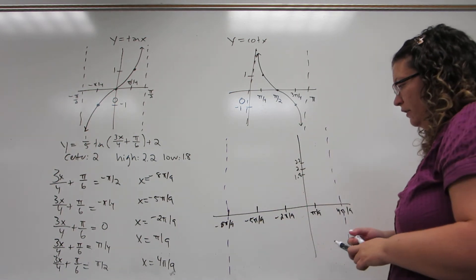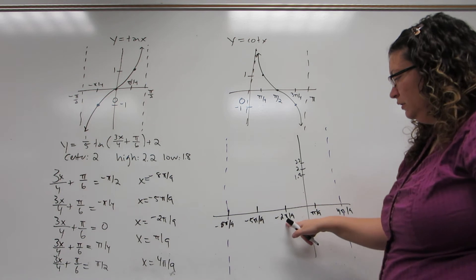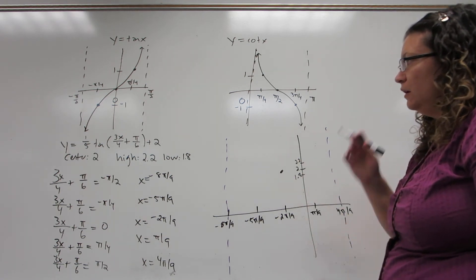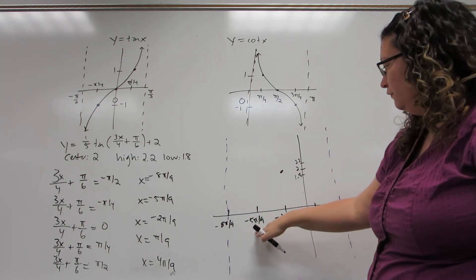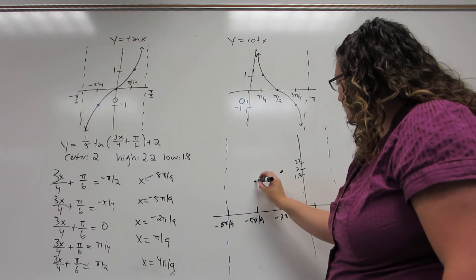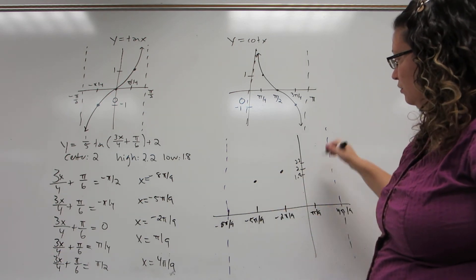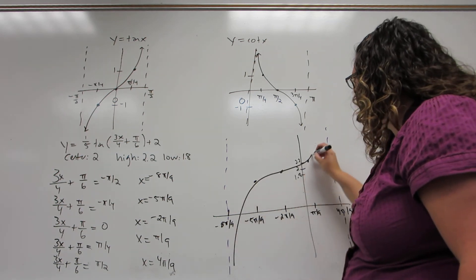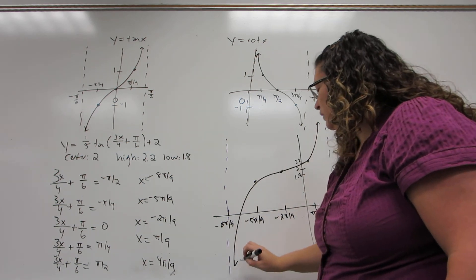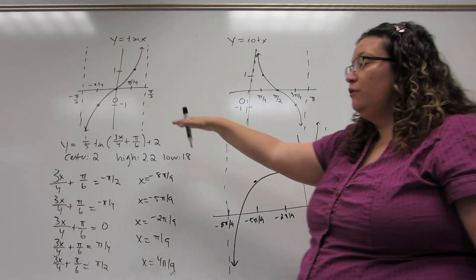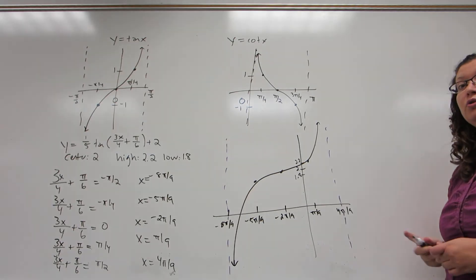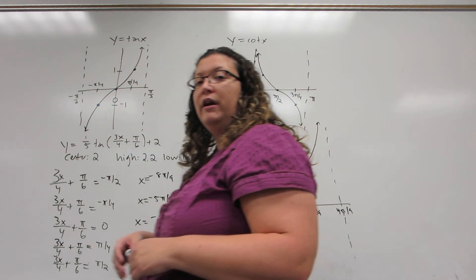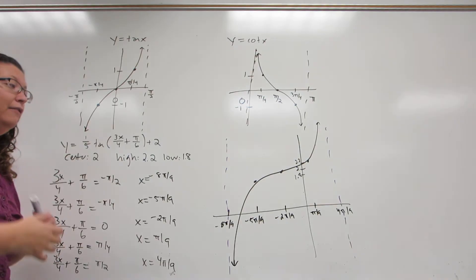Then the center special point always has y-coordinate, the center. This is a tangent graph, so it's moving up. So the first quarter point has the low y-coordinate, and the third quarter point has the high y-coordinate for this graph. You notice this one is much curvier than the original, and that's because the amplitude was so small. So a smaller amplitude makes the overall graph curvier. A bigger amplitude makes the overall graph less curved.